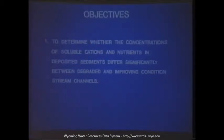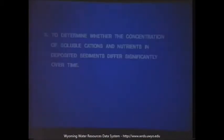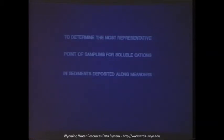The particular study which we're concerned with today had three primary objectives. First, to determine whether concentrations of soluble cations and nutrients in deposited sediments differ significantly between degraded and improving condition stream channels. Secondly, to determine whether concentration of soluble cations and nutrients in deposited sediments differ significantly with bank position or level. Lastly, to determine where the concentration of soluble cations and nutrients in deposited sediments differ significantly over time. A secondary objective was to determine the most representative point of sampling for soluble cations in sediments deposited along meanders.